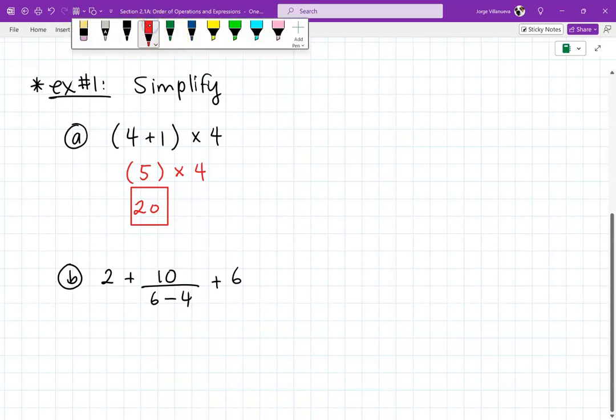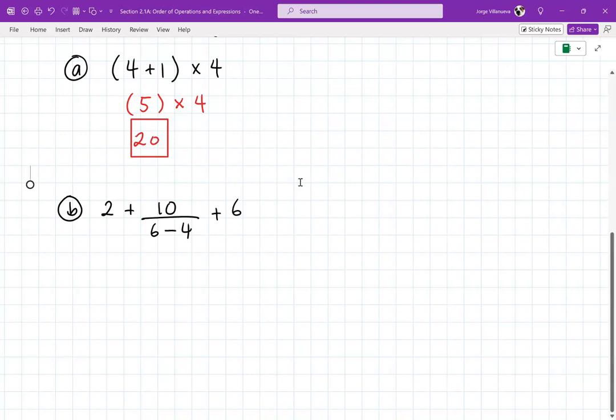2 plus 10 over 6 minus 4 plus 6. So in this case, I don't have any parentheses. I don't have any exponents. So P and E, they don't matter. There is no multiplication. But I do see a division. 10 divided by 6 minus 4. So first, I've got to simplify the denominator. 6 minus 4, right? And that's going to give me a 2. So 2 plus 10 over 2 plus 6. Whenever you're doing a division problem and you see a fraction, you've got to work the top and then the bottom. Work them out first. Now, I've still got to do a division because the other stuff's adding. And adding goes at the very end, right? Addition, subtraction at the very end. So 10 divided by 2 is 5. And, I mean, you don't have to do this next part step by step if you don't want to. 2 plus 5 is 7. 7 plus 6, that's 13.